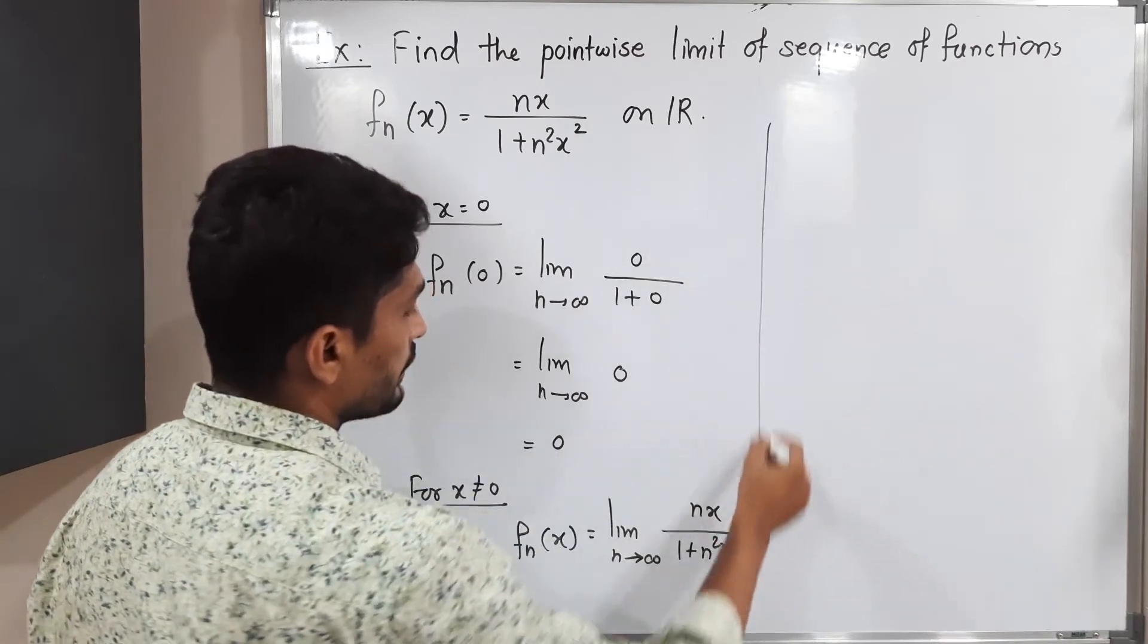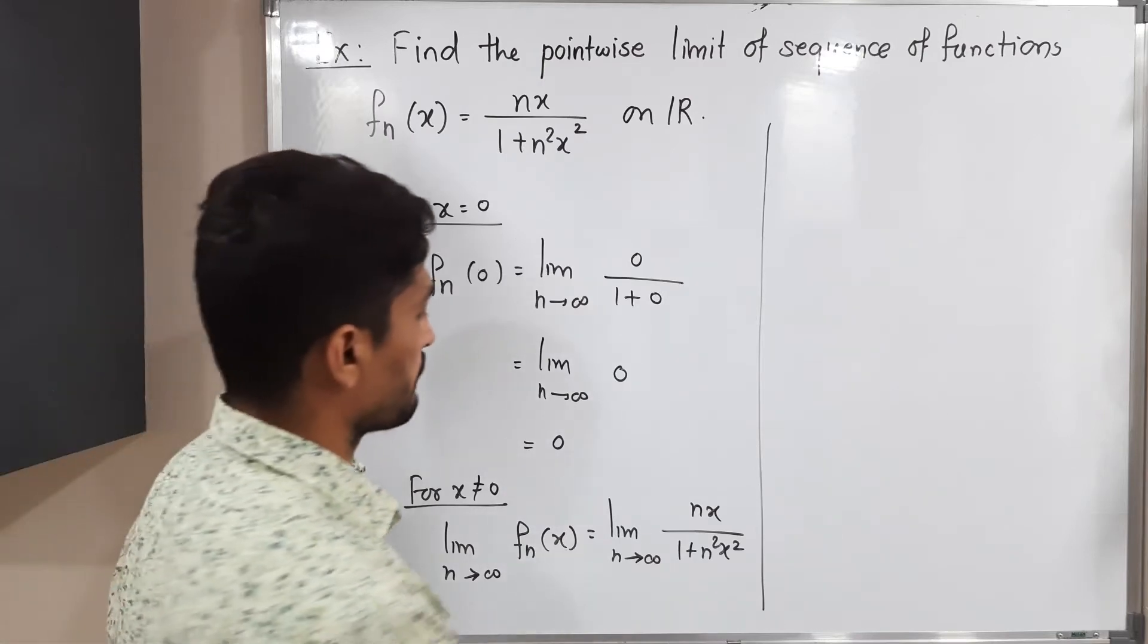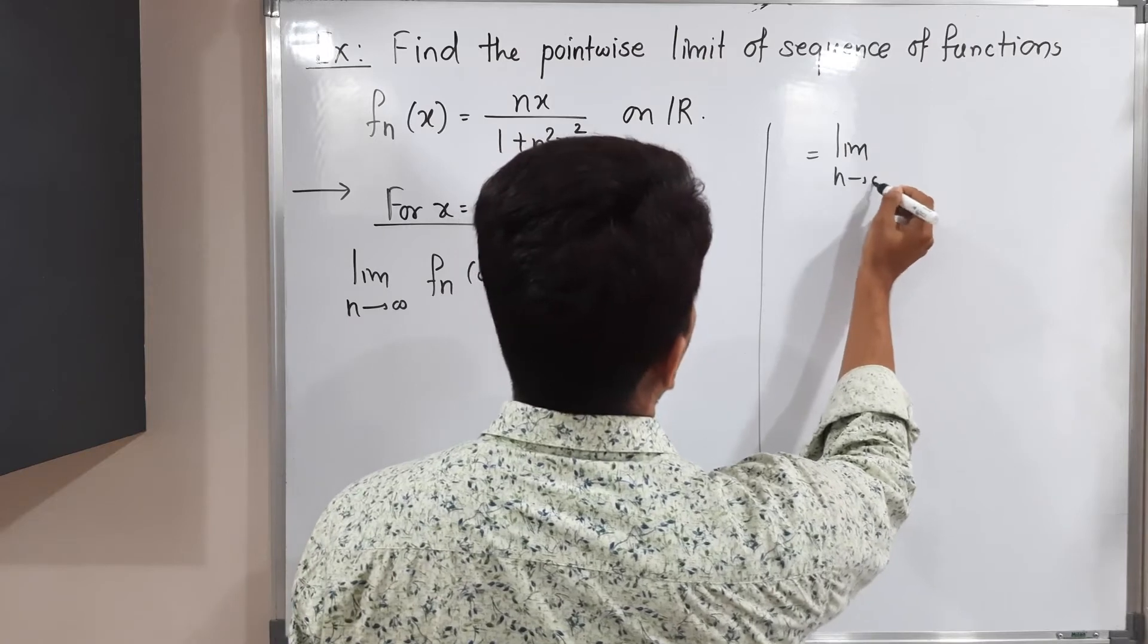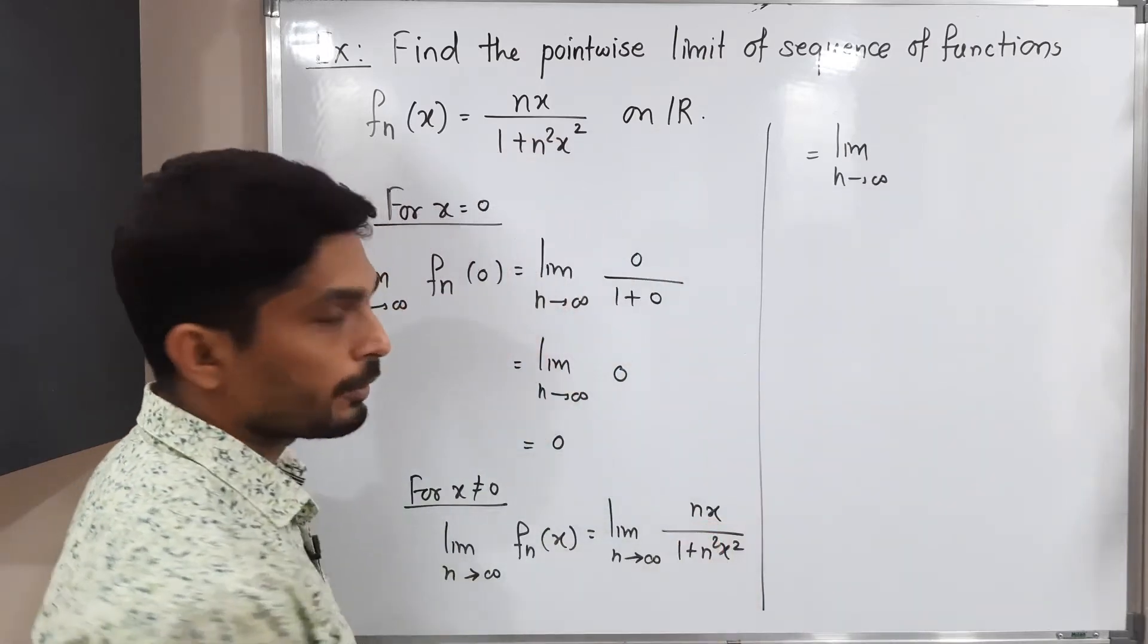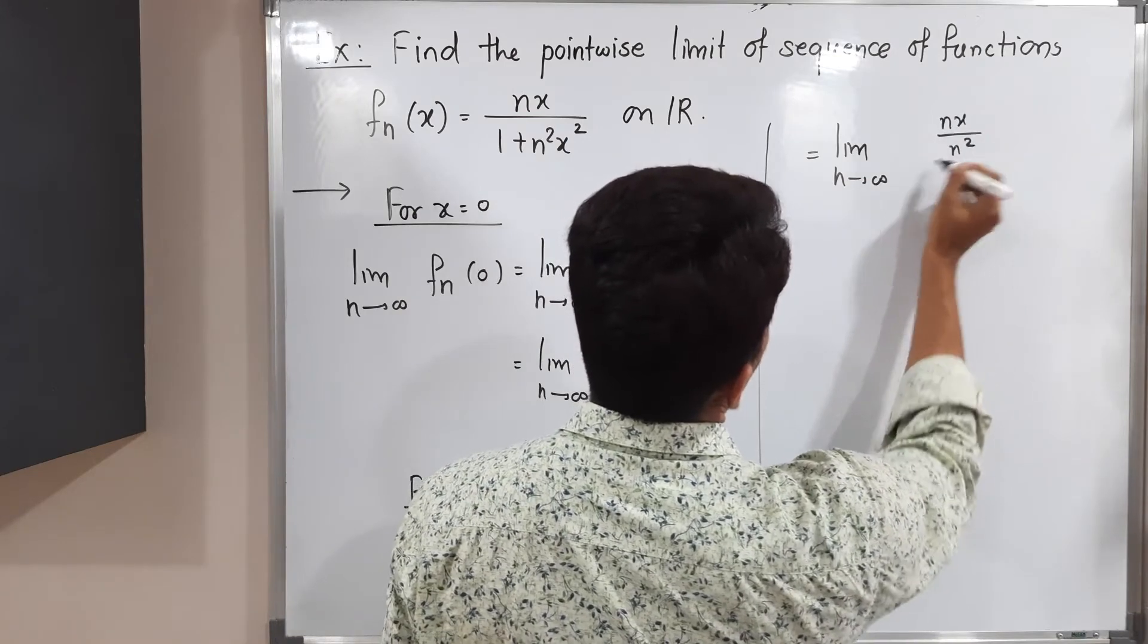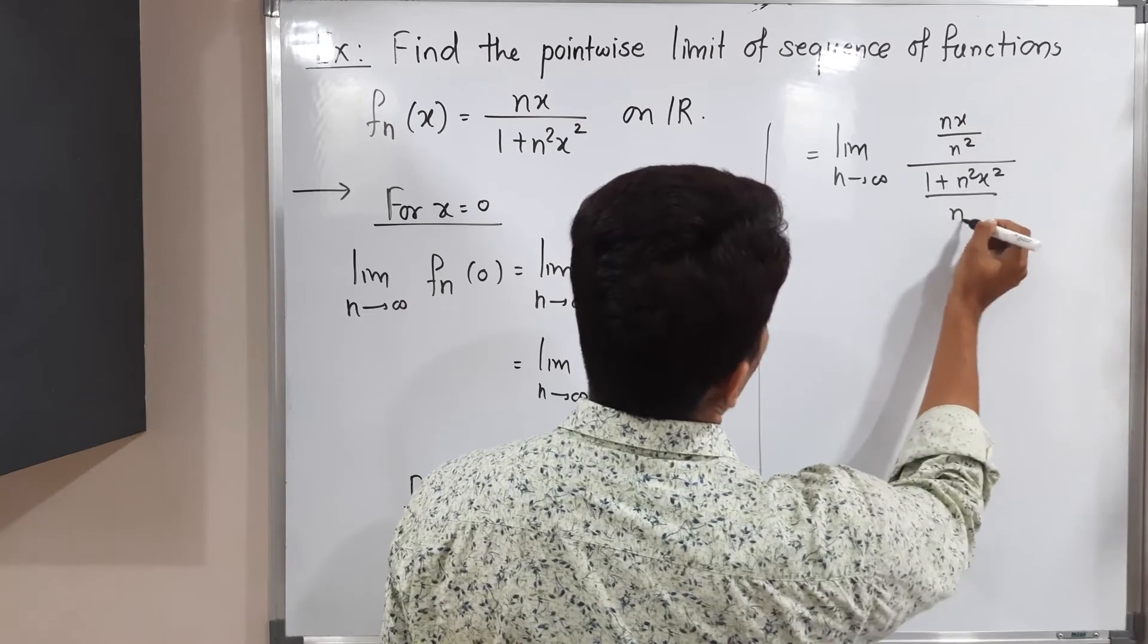So what will I do? I am going to divide numerator and denominator by n². Let us see what will happen. This equals limit as n tends to infinity. I am dividing numerator and denominator by n², so you will have nx/n² over (1 + n²x²)/n².